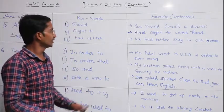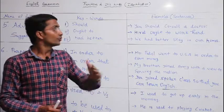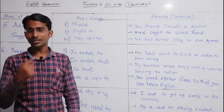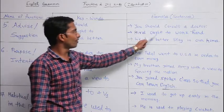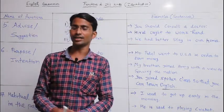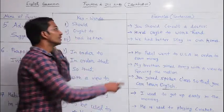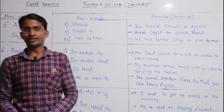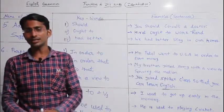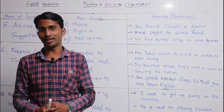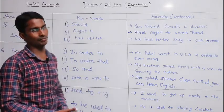'You should consult a doctor' — we are advising someone to see a doctor. 'Hero ought to work hard' — we are suggesting that a person named Hero should work hard. 'We had better stay in our homes' — meaning it is better for us to stay at home. So these examples illustrate the advise function.